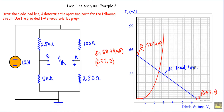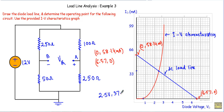The DC load line intersects the IV curve at the operating point (Q point), which has coordinates of approximately 2.5V and 37 mA. This voltage indicates VDQ and this current indicates IDQ, giving us the operating point or Q point of the circuit.